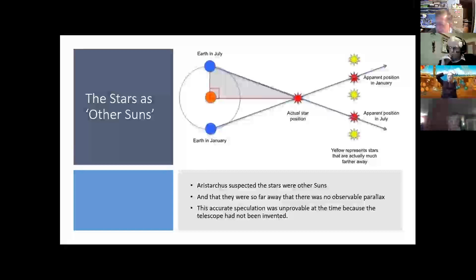And he came up with the idea of being able to do this measurement by parallax, but, of course, because the telescope hadn't been invented, he wasn't able to make accurate enough measurements to achieve any of this in reality.